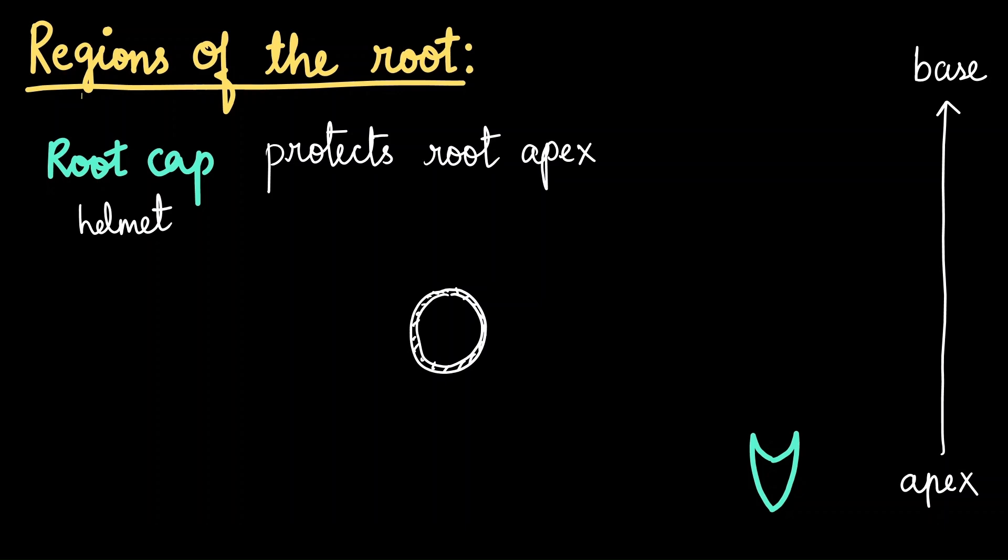But protection isn't its only job. The root cap also secretes a slimy substance that helps the root to glide through the soil a little more easily. Now here is something very cool about the root cap. The root cap can also sense gravity. And this phenomenon is called gravitropism. Gravi is gravity, tropism is ability of a plant to grow towards a certain feature. This ensures that the root always grows downwards, no matter how you plant the seed.